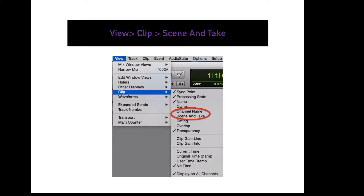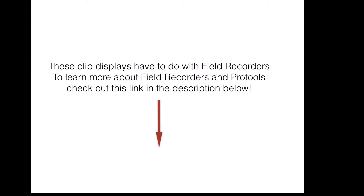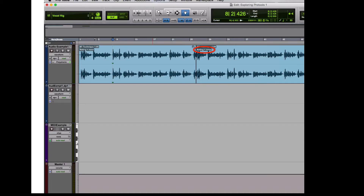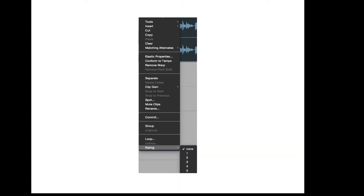To display the channel name or scene and take from a field recording device on a clip, go to View, Clip, Channel Name, or View, Clip, Scene and Take. This will display the channel name or scene and take if specified in the field recording device. There will be a link in the description to learn more about field recording functions in Pro Tools. To display the clip rating, go to View, Clip, Rating. Rating is chosen by right-clicking and selecting a number between 1 and 5, helpful in deciding which take is the best.